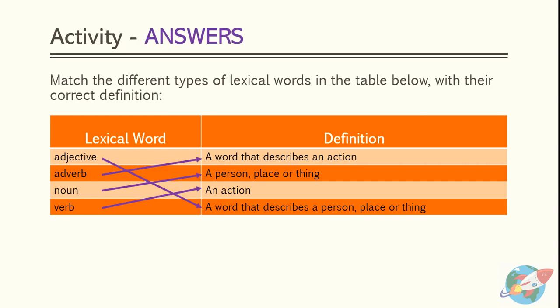Welcome back. Here are the answers to our activity. The lexical word adjective is a word that describes a person, place, or thing. An adverb is a word that describes an action. A noun is a person, place, or thing. And a verb describes an action.